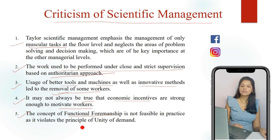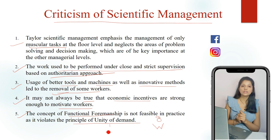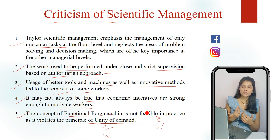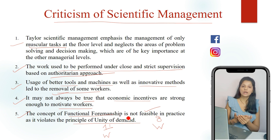The fifth criticism is that the concept of functional foremanship is not visible in practice, as it violates the principle of unity of command. According to functional foremanship, a single worker can receive orders or instructions from eight supervisors, which goes against the unity of command principle — which states that a single worker should receive orders from only one supervisor. This creates a lot of confusion and conflicts. These were the few limitations of scientific management theory, though in spite of being criticized on various grounds, many of its recommendations are still used in modern business management.